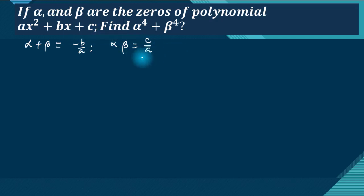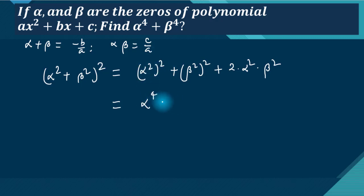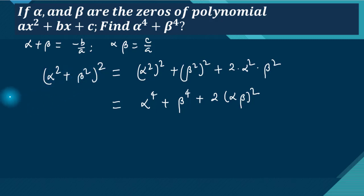We write alpha to the fourth plus beta to the fourth as alpha squared plus beta squared, whole squared. Expanding: alpha squared plus beta squared whole squared equals alpha to the fourth plus beta to the fourth plus two times alpha squared beta squared. So alpha to the fourth plus beta to the fourth equals alpha squared plus beta squared whole squared minus two times alpha beta whole squared. And alpha squared plus beta squared equals alpha plus beta whole squared minus two alpha beta.